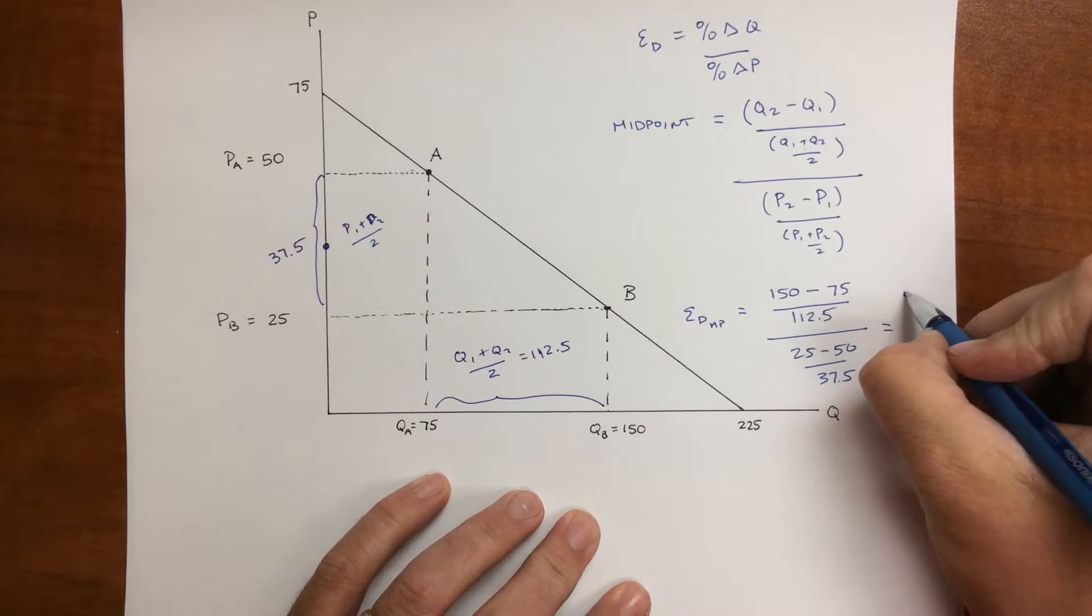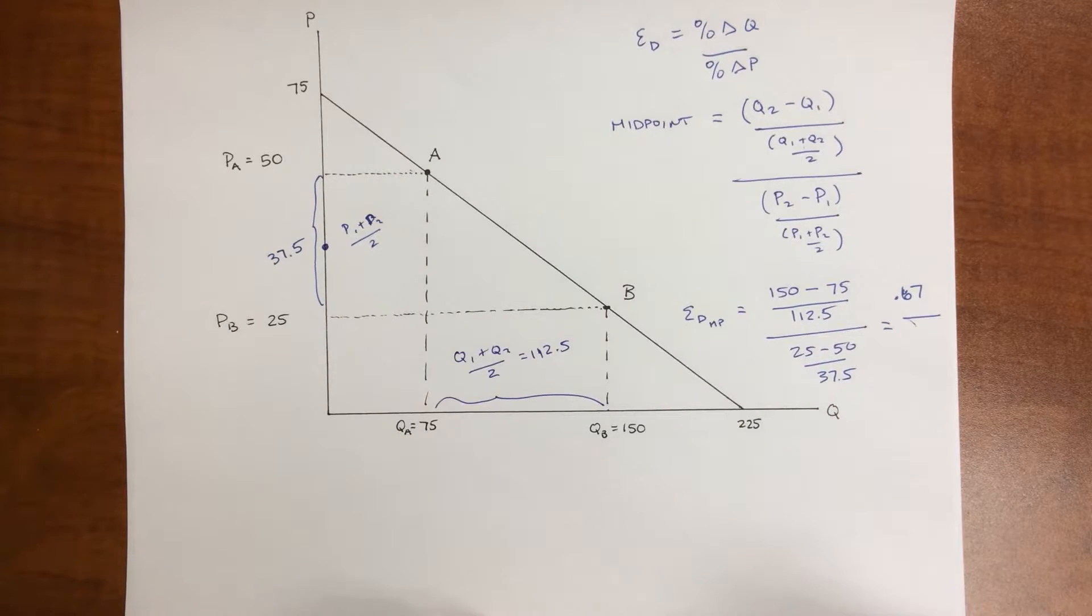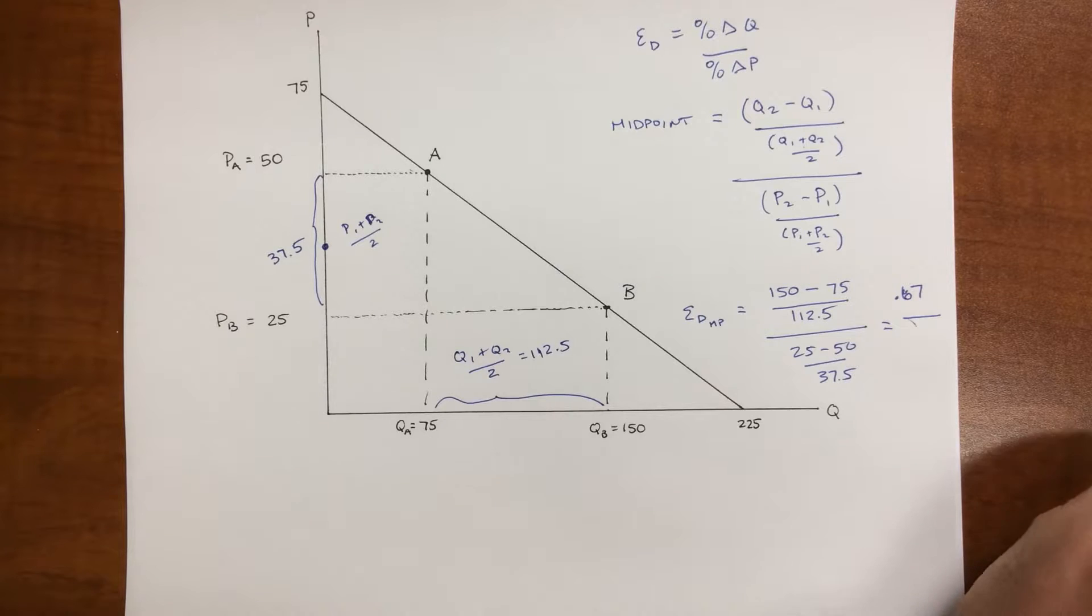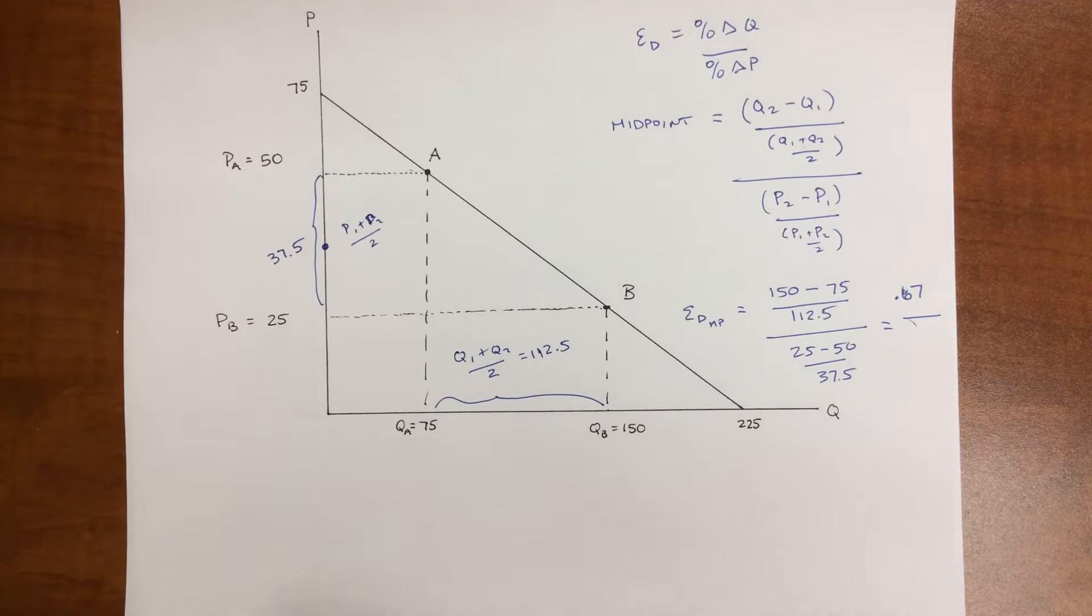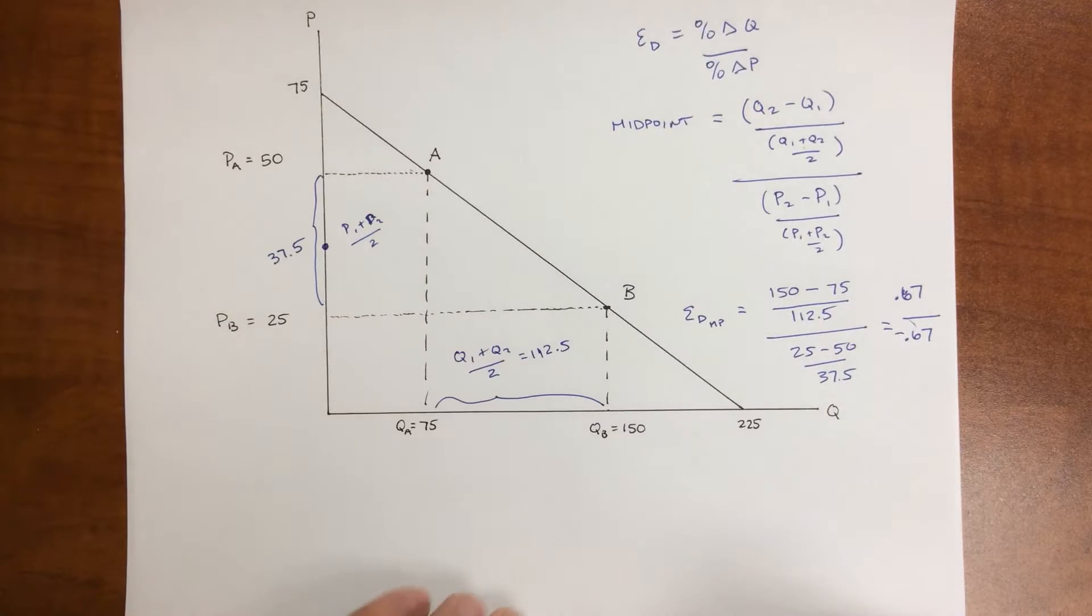So here I get 75 divided by 112.5, or about a 66.67% change in quantity, divided by 25 divided by 37.5, or about a 0.67% change in price.